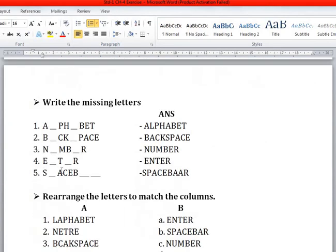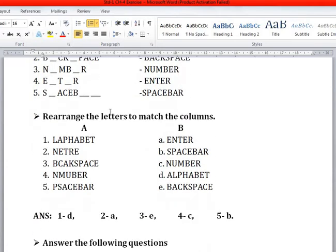After completing this MCQ, start the missing letter. Write the missing letters. Here the questions are given and answer is here. First is the alphabet, second is Backspace, third is Number, fourth is Enter, fifth is Spacebar. After completing this missing letters, write down this.